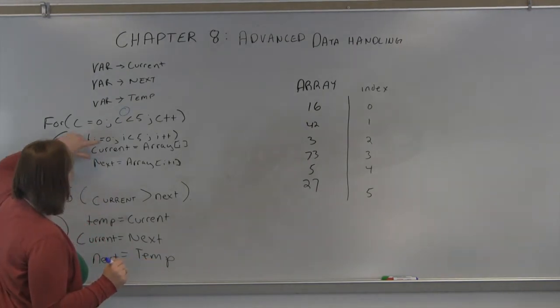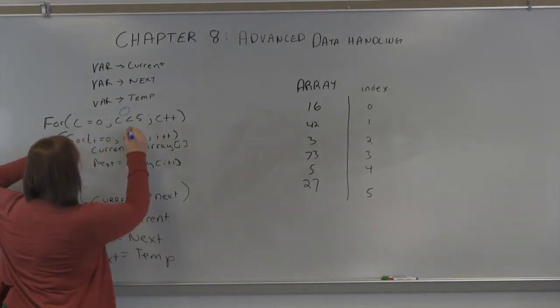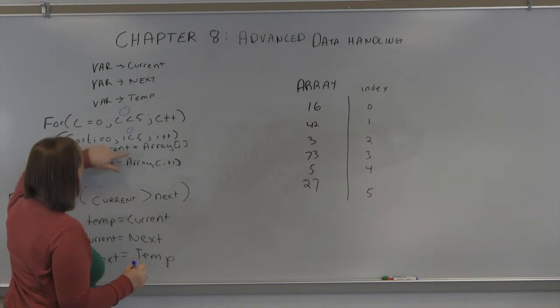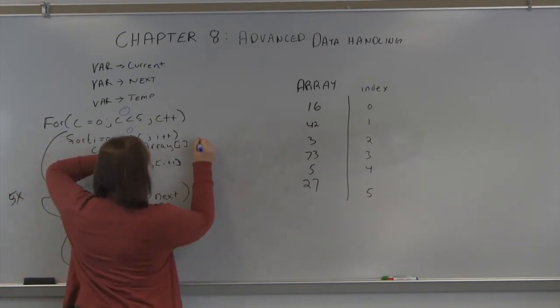And for i equals zero, i less than five, we're starting with zero. The current is array i, that's zero, that's 16. Next is 42.